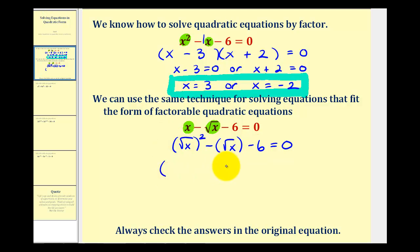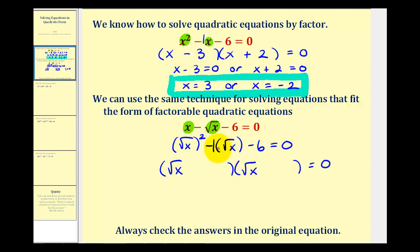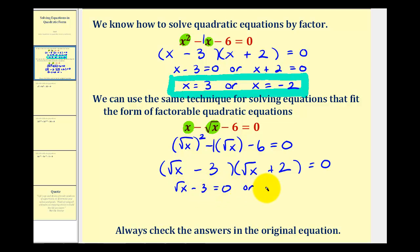So this will factor into two binomial factors, but now instead of x and x like we had in the first example, we'll have the square root of x and the square root of x. The factors of negative six that add to negative one are still negative three and positive two. Setting these factors equal to zero, we have the square root of x minus three equals zero, or the square root of x plus two equals zero.